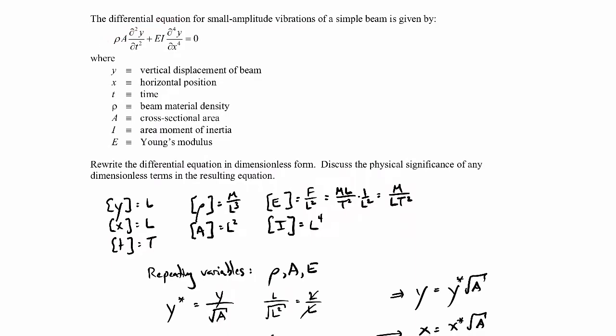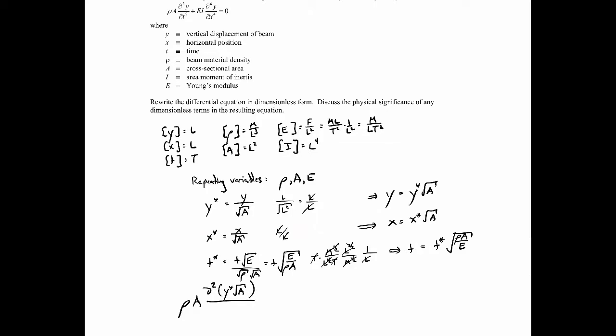Let me shrink this down so I can see the equation better. So rho times A times d squared — then substituting in for y — it'll be y star times the square root of A, all over dt squared, so that'll be d(t star)² times rho A over E, all squared. Plus E times I times d to the fourth of y star over the square root of A.